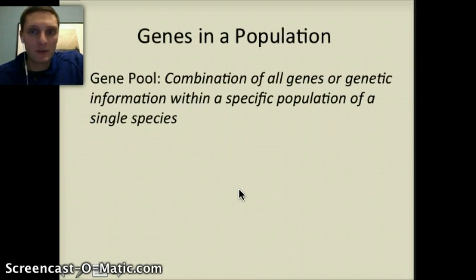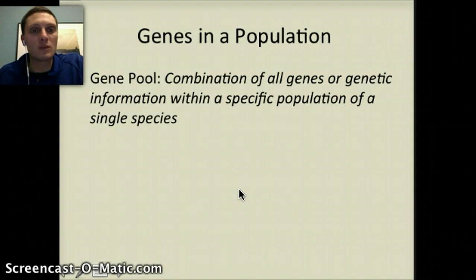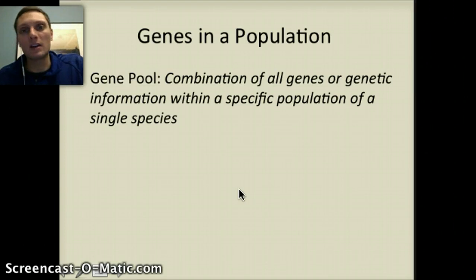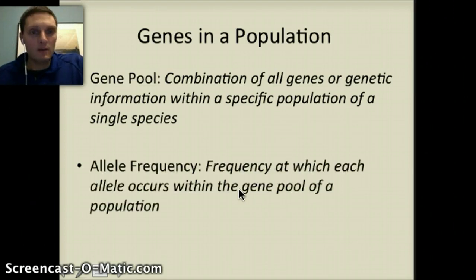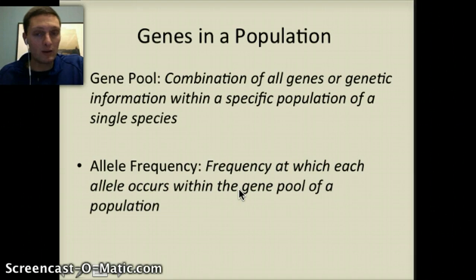Moving forward, we want to define a couple of terms. A gene pool is a combination of all the genes or genetic information within a specific population of a single species. The allele frequency is the frequency at which each of those different alleles occurs within the gene pool of a population. As you saw in our Hardy-Weinberg video, we can actually calculate this to see if the allele frequency is changing — to see if a population is actually evolving.